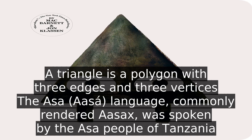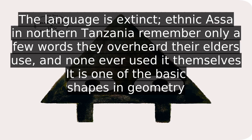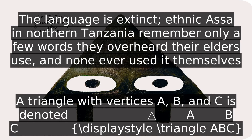A triangle is a polygon with three edges and three vertices. It is one of the basic shapes in geometry. A triangle with vertices A, B, and C is denoted A, B, C.